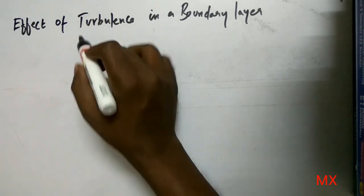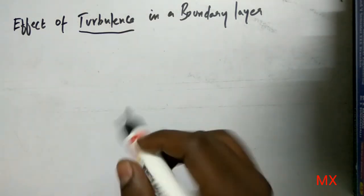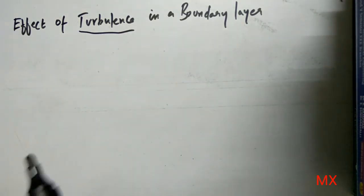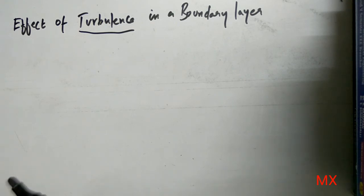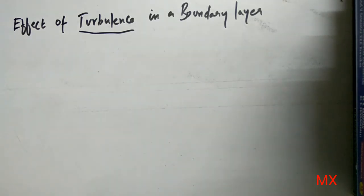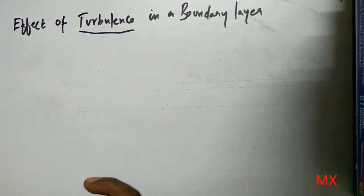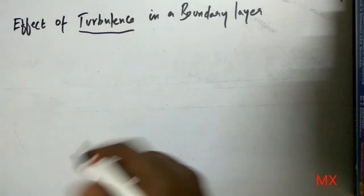Turbulence in the boundary layer is essentially an agitation — it is not in a stable position and depends upon the motion. First we are going to see what turbulence makes as an effect in this boundary layer.